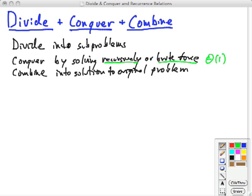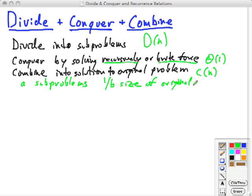We need to pay the cost D(n) of dividing up the problem. We need to pay the cost of combining into a solution to the original problem, C(n). This is all for review. We've divided it up into subproblems, and often it has the form where we divide it up into a subproblems, 1 over b size of original. If you put that all together into a formula, you get the classic recurrence relation.